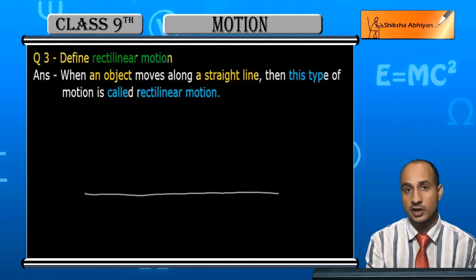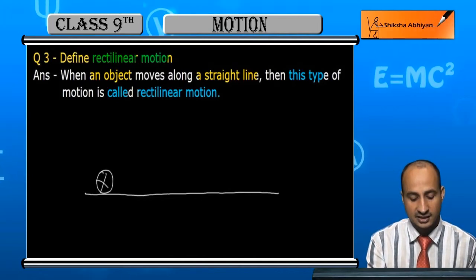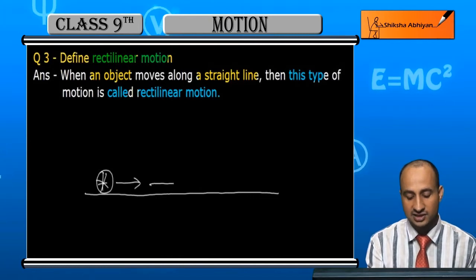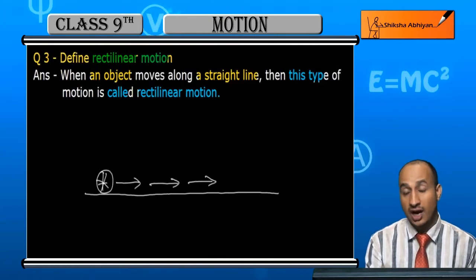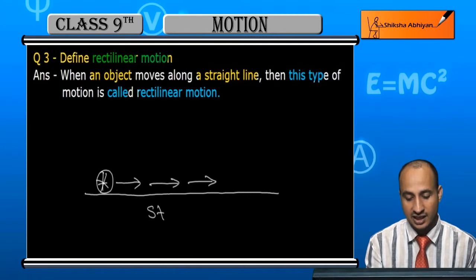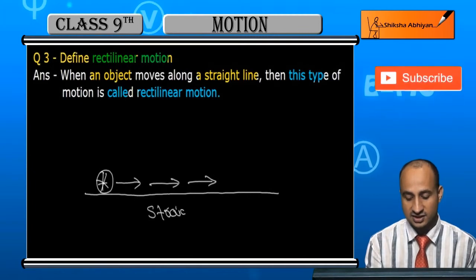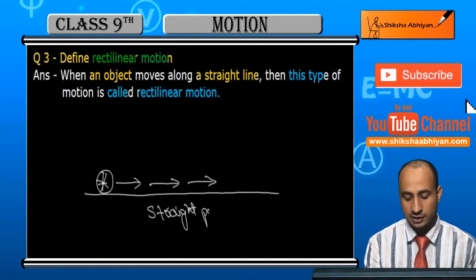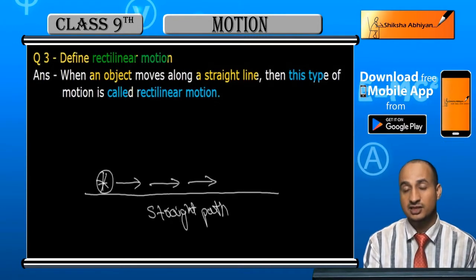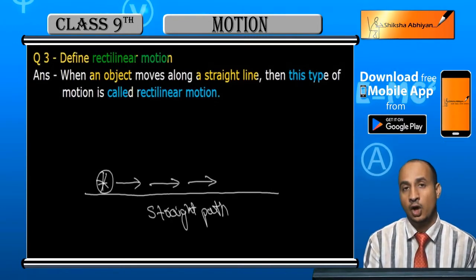If there is a wheel and this wheel is moving in this direction like this, so now you can see here that this is a straight path. This is a straight path, and along this straight path when you move, this motion is rectilinear motion.